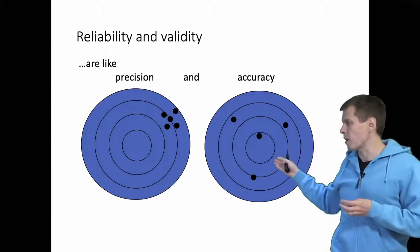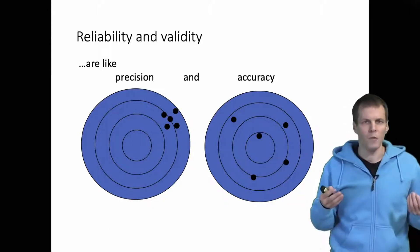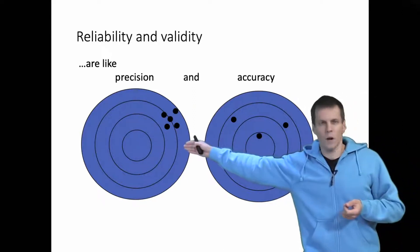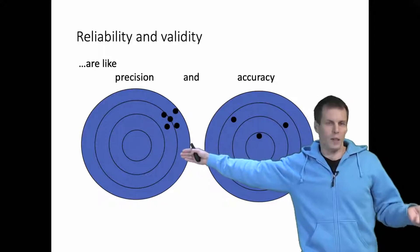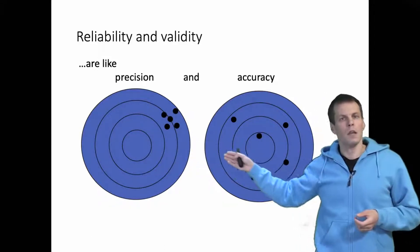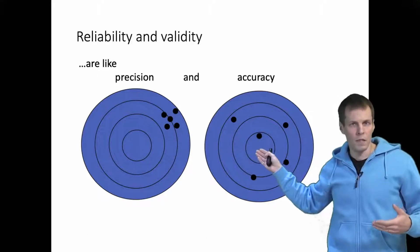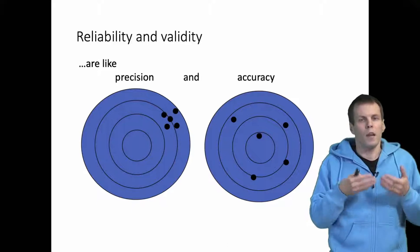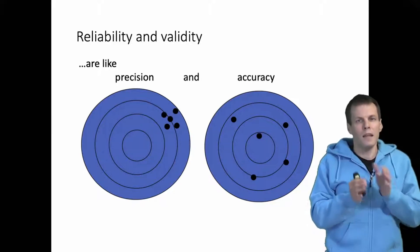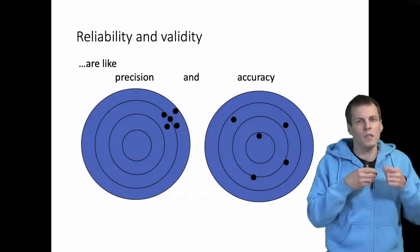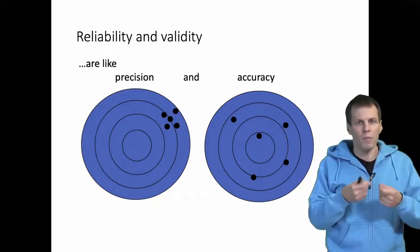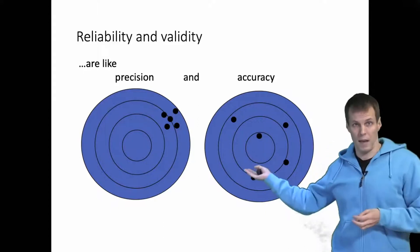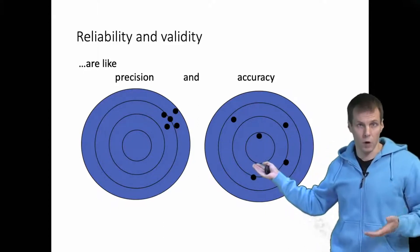If we consider these two target practices and we had to stand in front of one of the targets, standing in front of this bull's eye would be perfectly safe because this shooter will never hit the target. But if we stand in front of this other target, we will eventually die if the person gets to shoot enough. So lack of reliability is less of a problem than lack of validity, because you can just repeat the study or measurement again and again and eventually, on average, you will be correct.